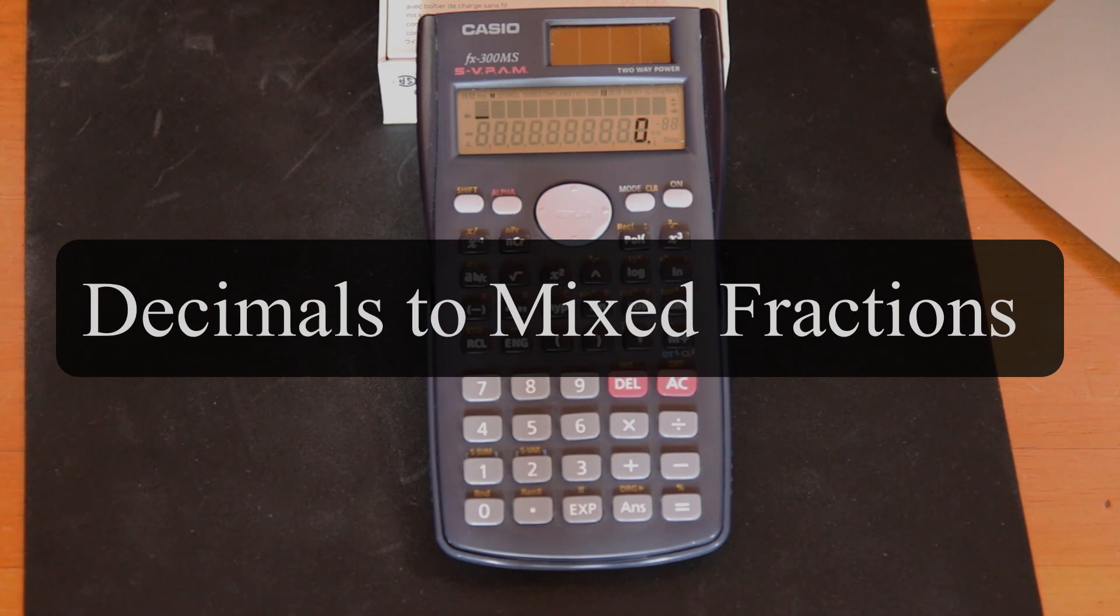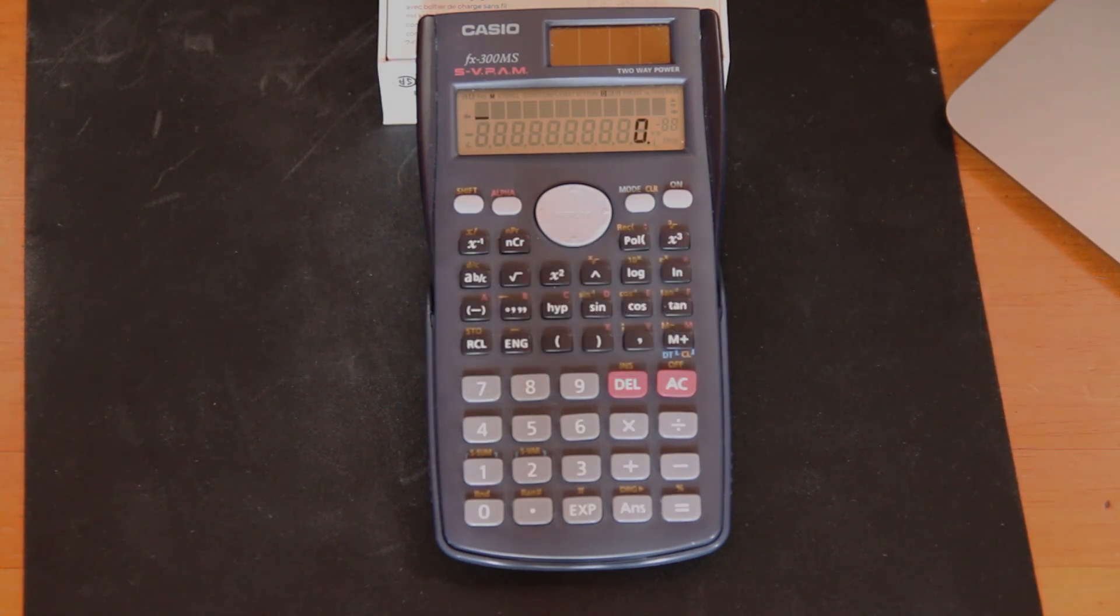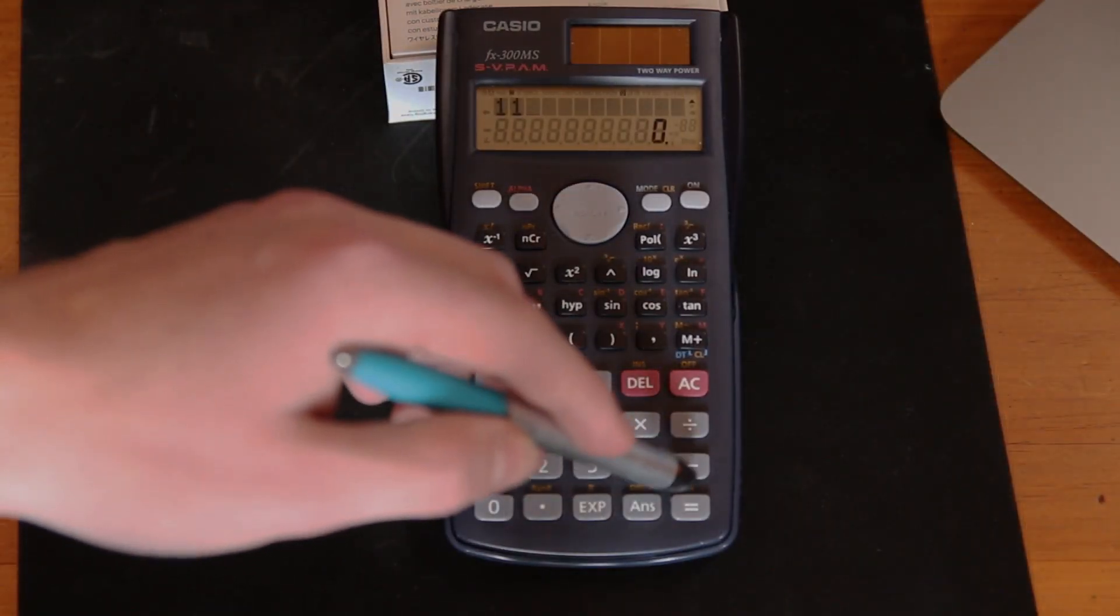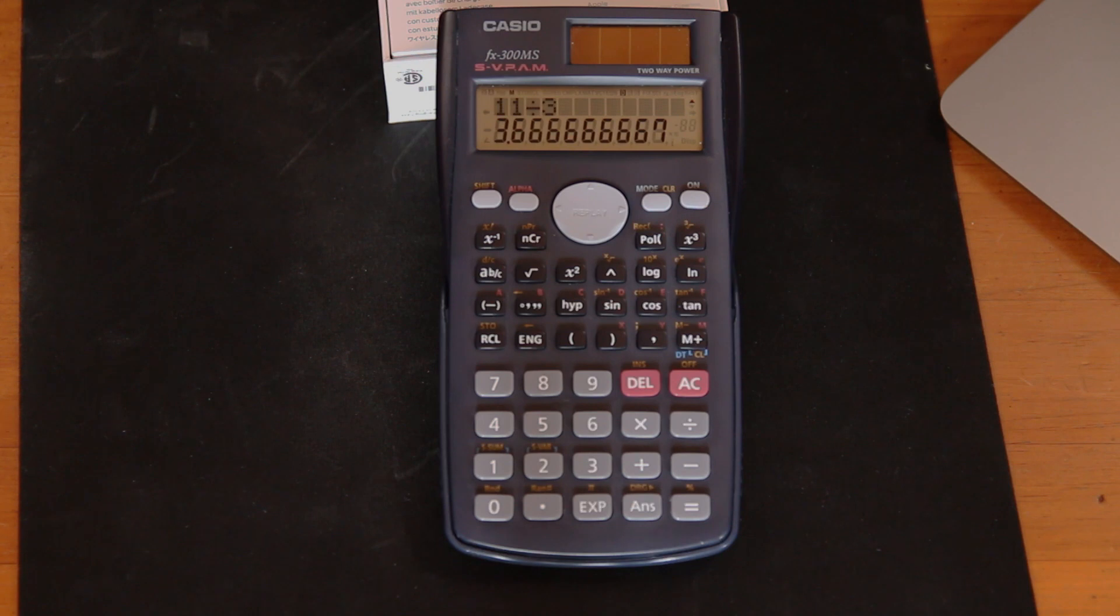Okay, so to show you guys how to convert from a regular old-fashioned fraction to a mixed fraction back to probably a decimal, we're going to start off with 11 divided by 3. As you can see, it gives us the 3.666666667.